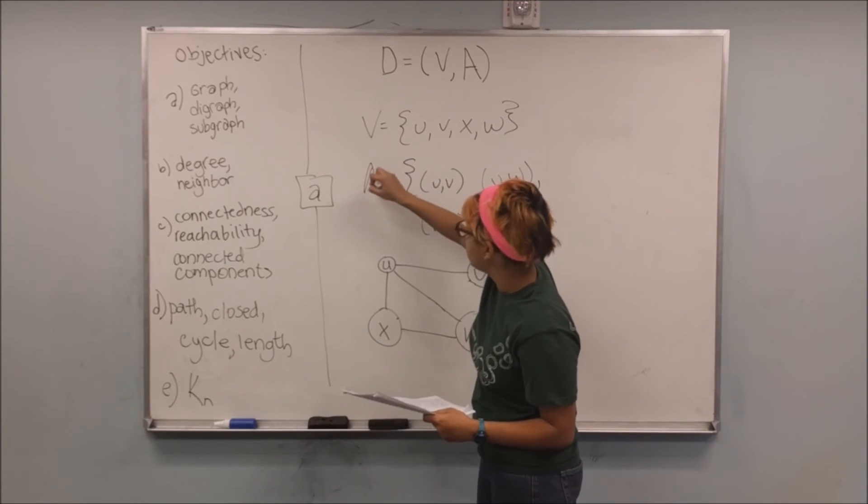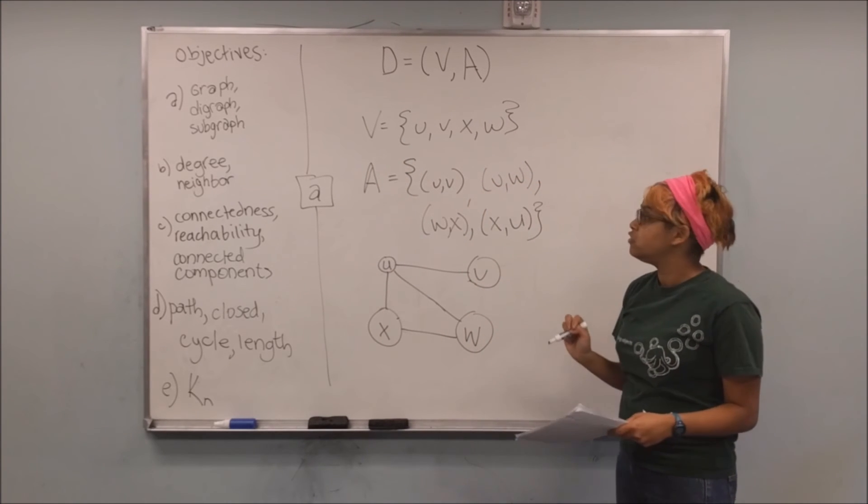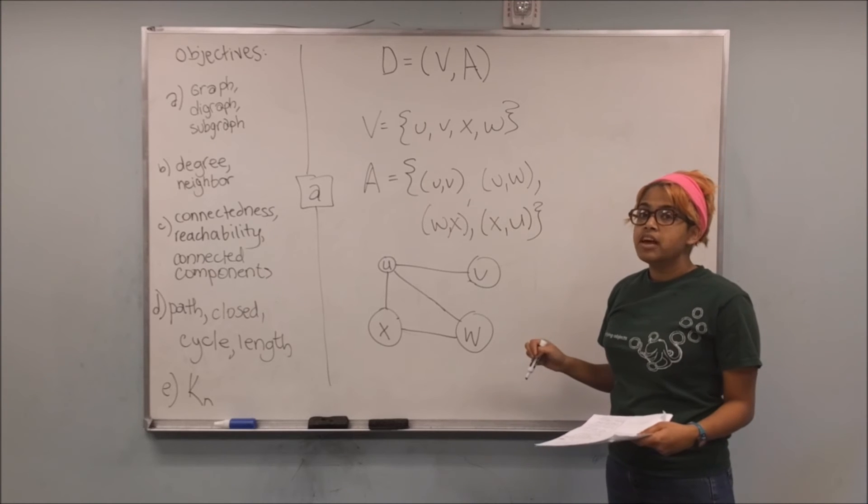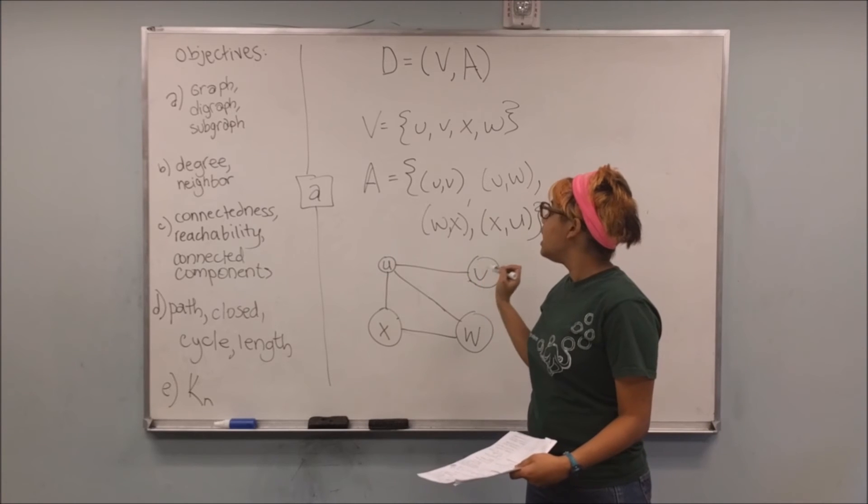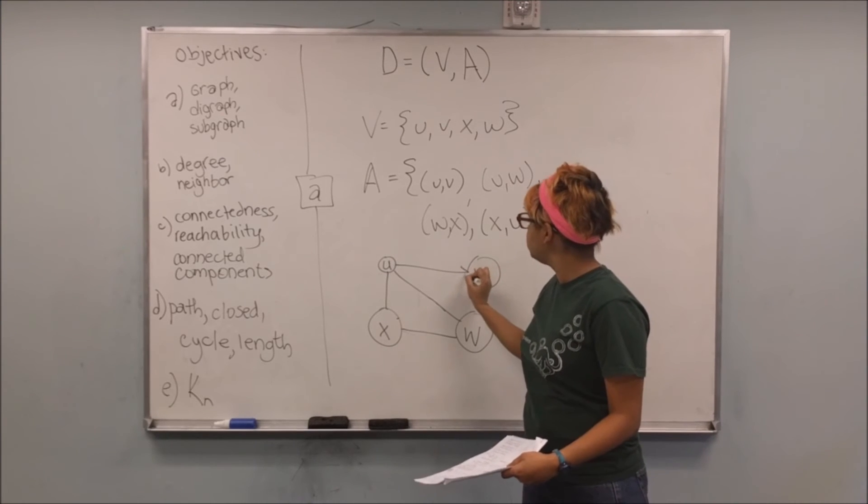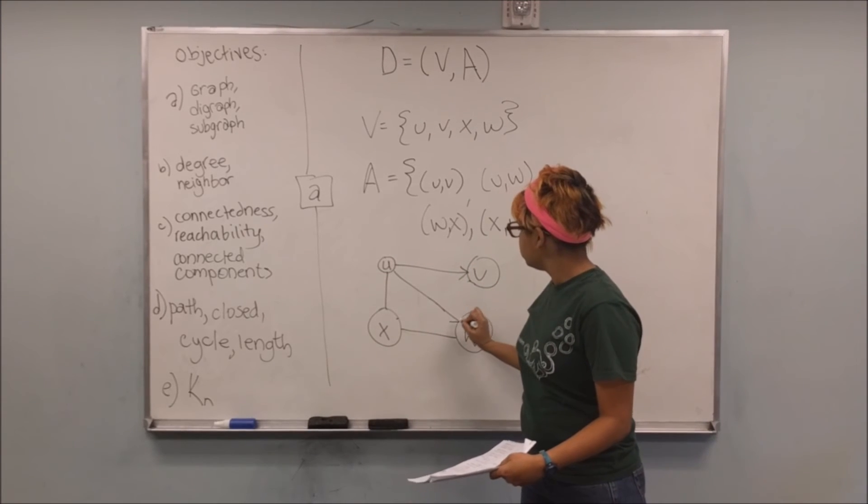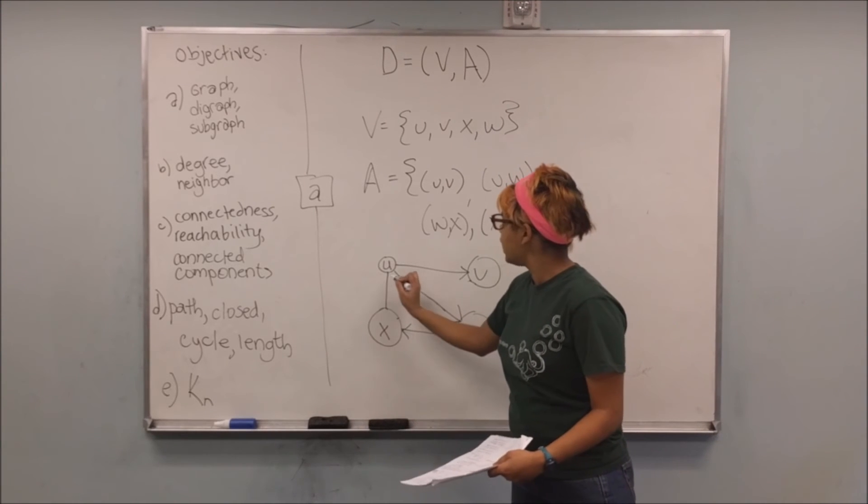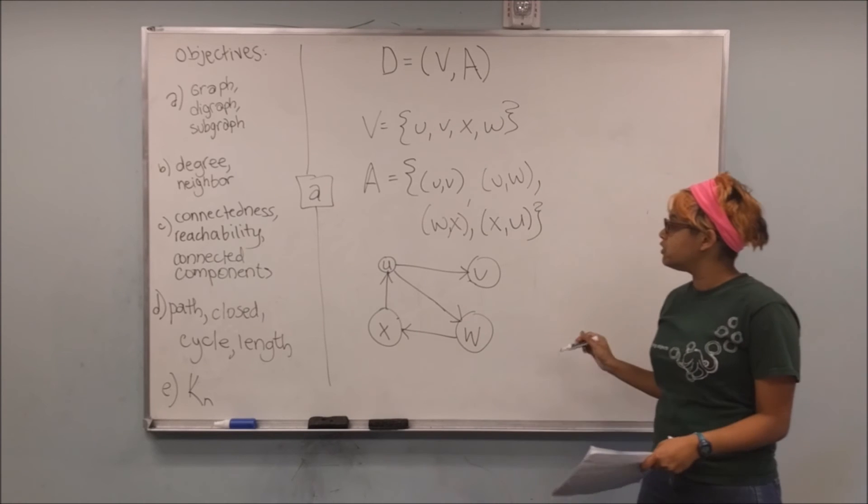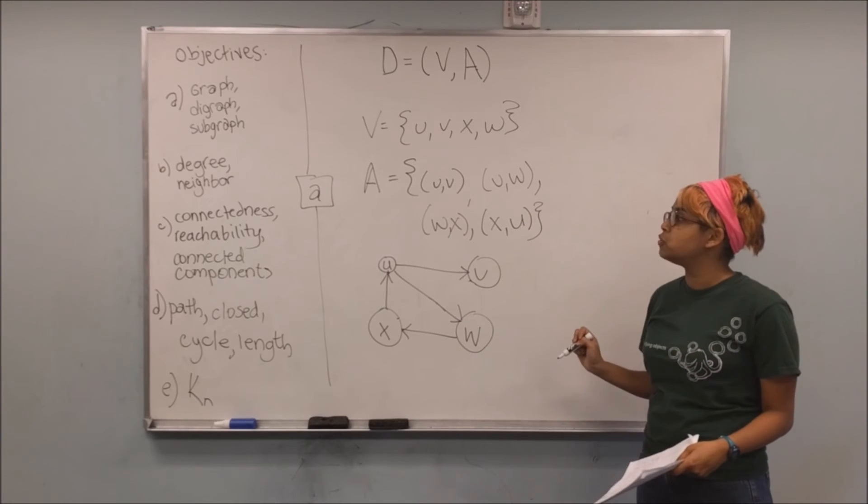And this is A, and now the order does matter. And the way that I represent that visually is the same way I did with Twitter. So in this case, I have an edge or an arc from U to V, U to W, W to X, and X to U. So visually,